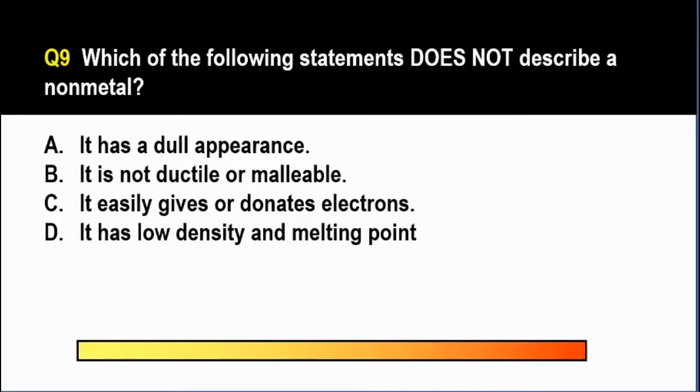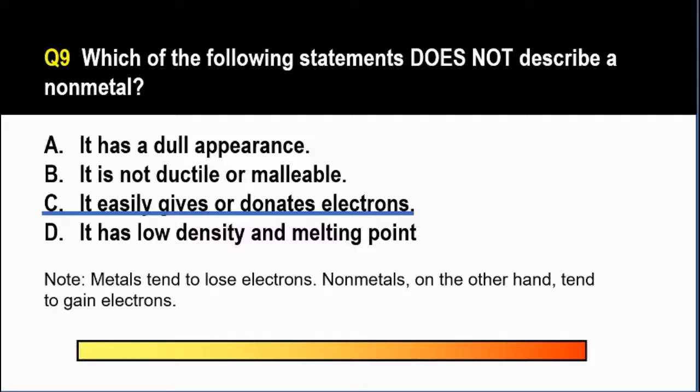The correct answer is letter C. Elements that are metals tend to lose or donate electrons. So mas mahilig sila magbigay ng electrons. Whereas elements that are non-metals tend to gain electrons. So yung mga non-metals naman, ito yung nag-a-accept ng mga electrons.